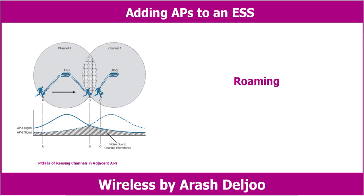This is shown by the signal strength graph of each AP. The client is able to form an association with AP1 at point A. Even at that location, some portion of AP2's signal can be received, albeit at a lower level. Because AP2 is using the same channel as AP1, the two APs and any client within range can essentially interfere with each other through co-channel interference.